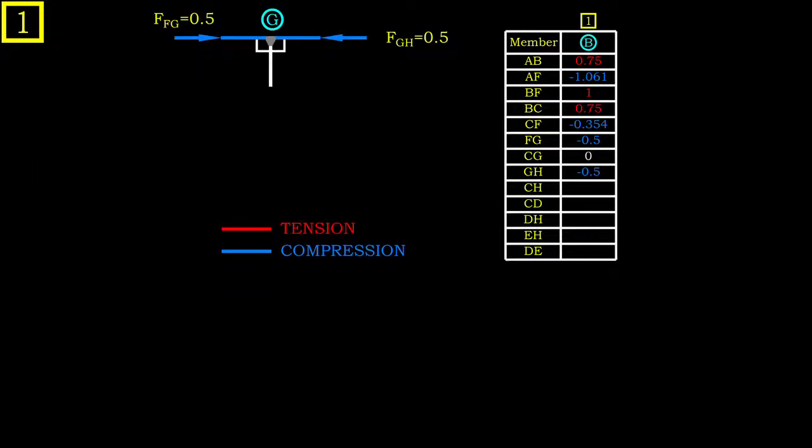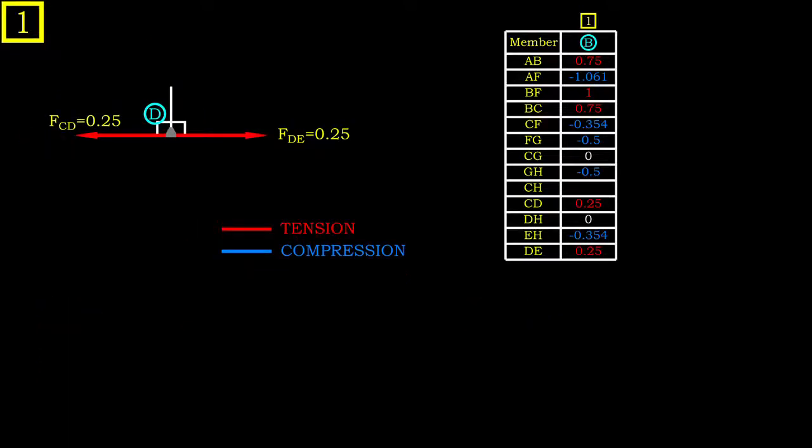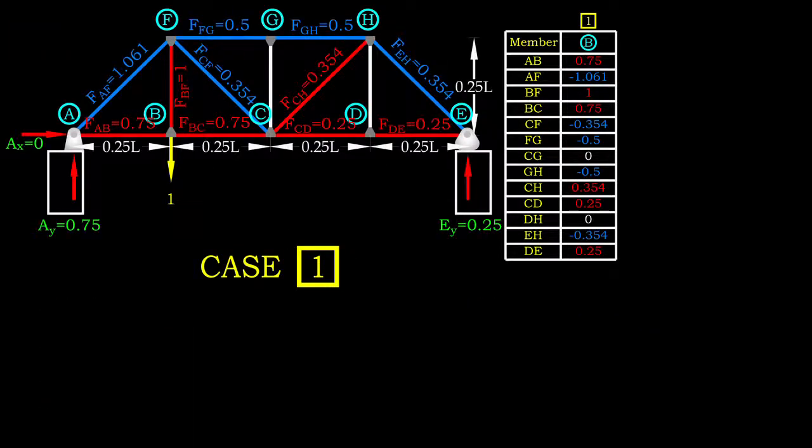We start from joint A, the point that connects only two truss members. As we reveal more member forces, we may proceed with joint that connects more members.